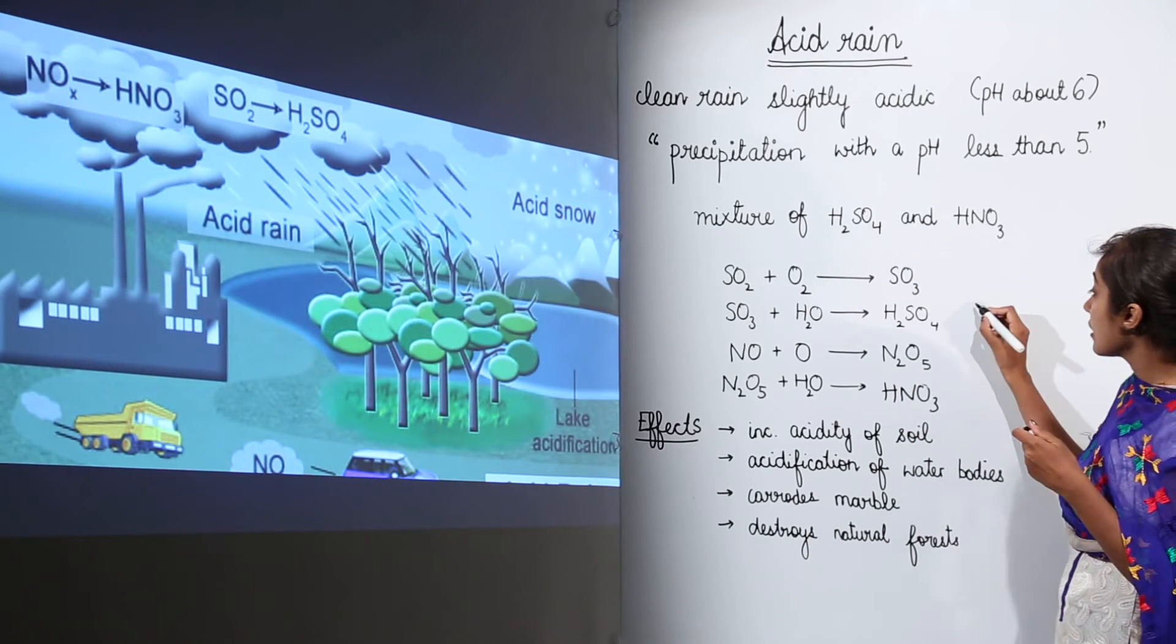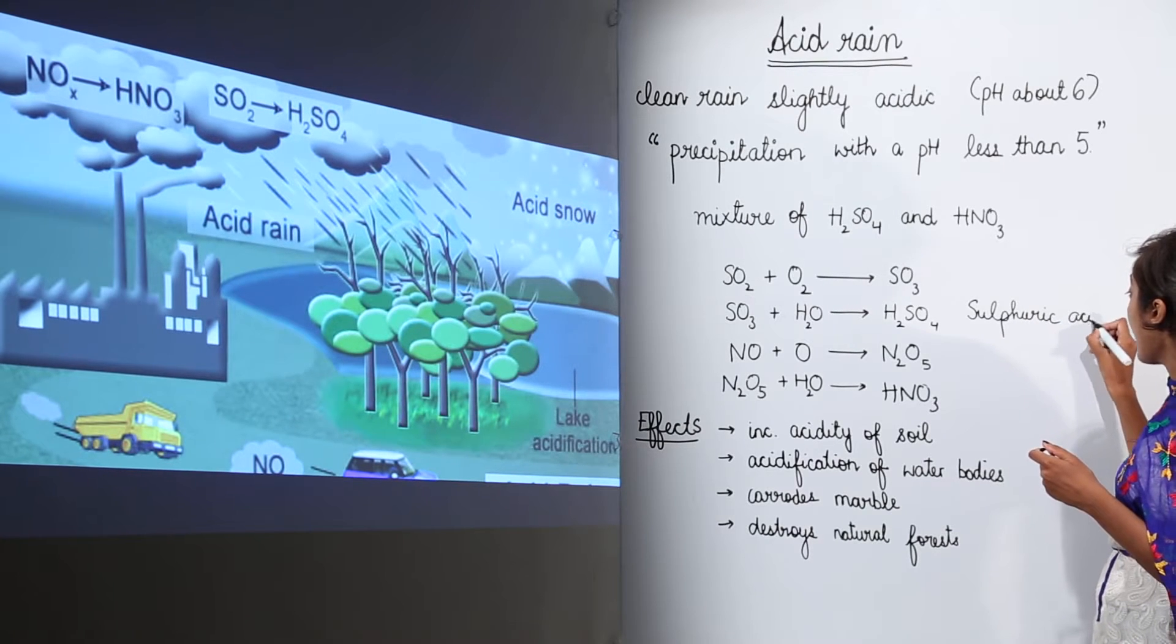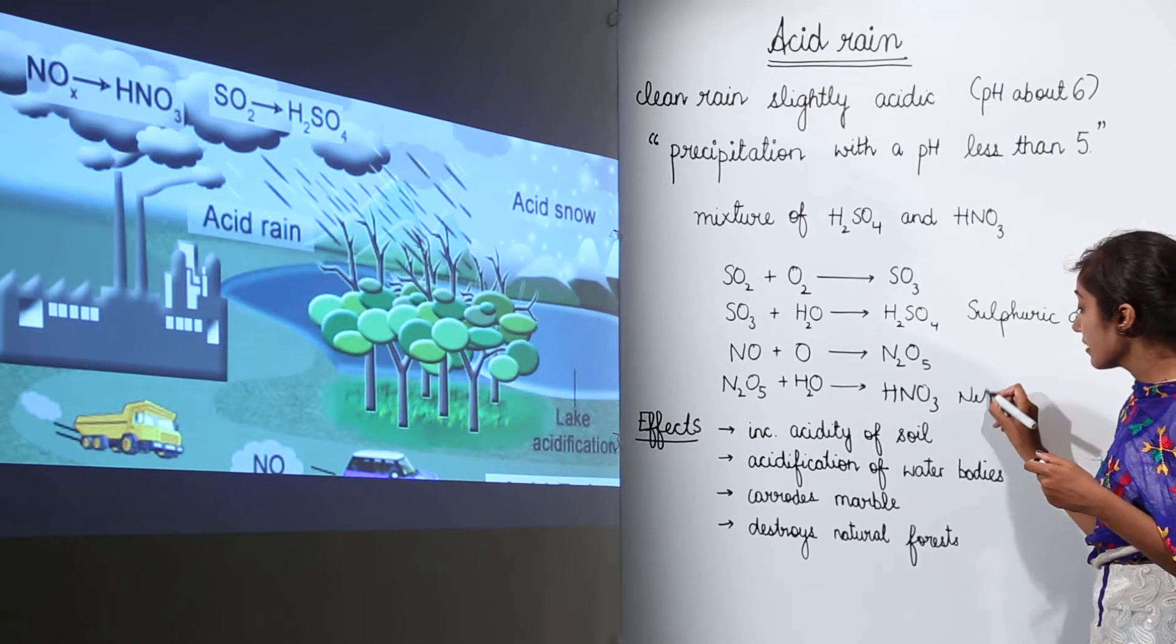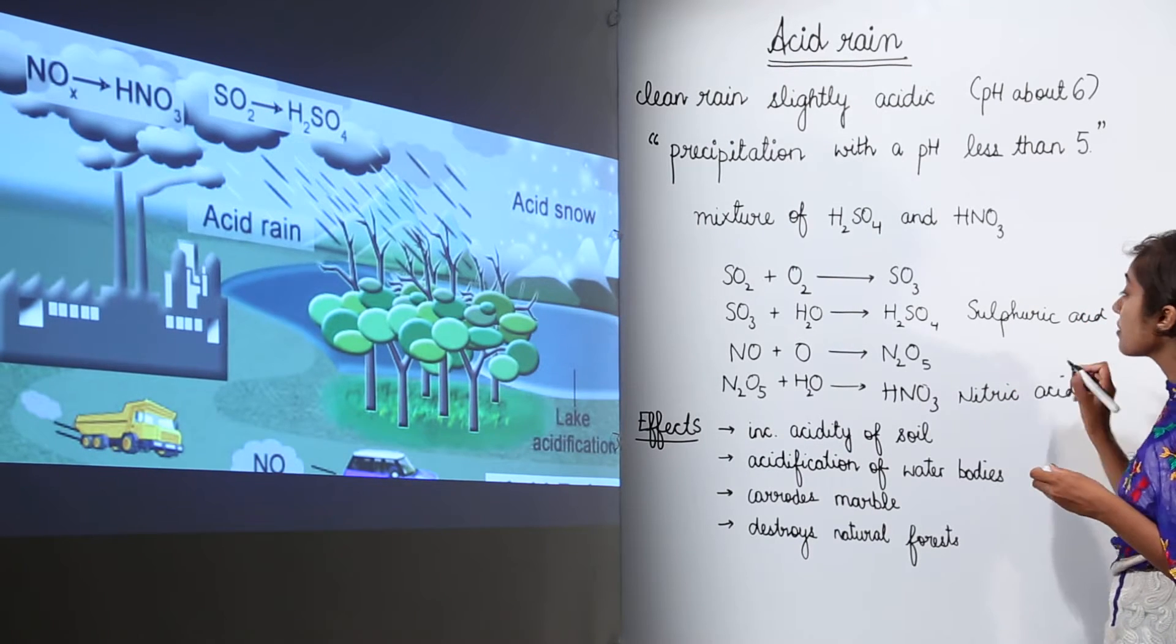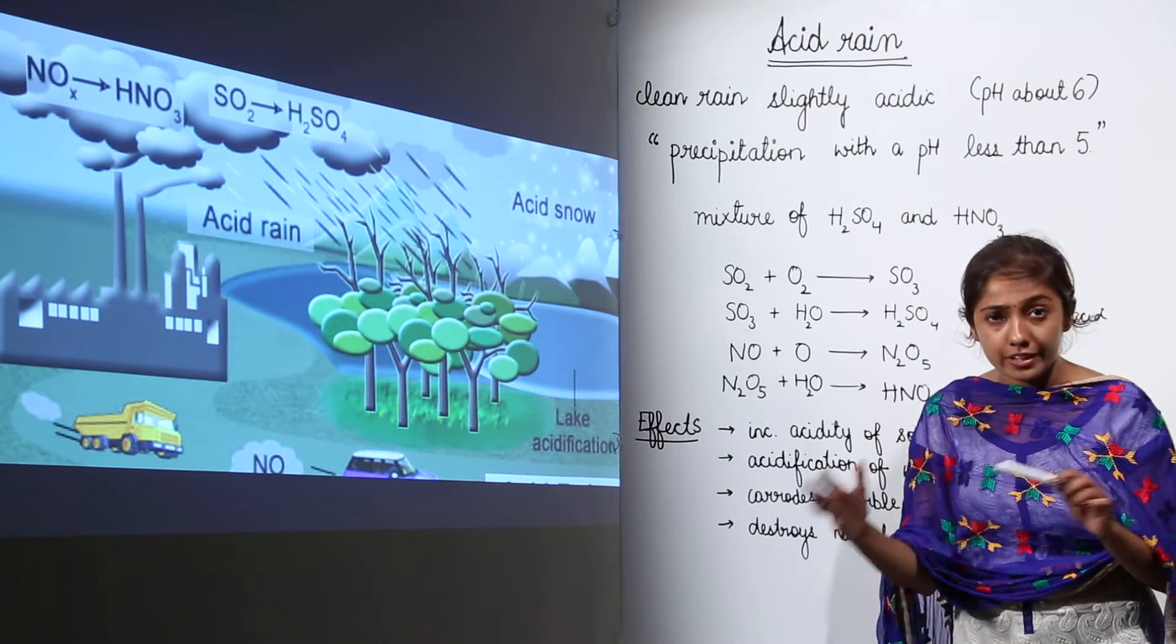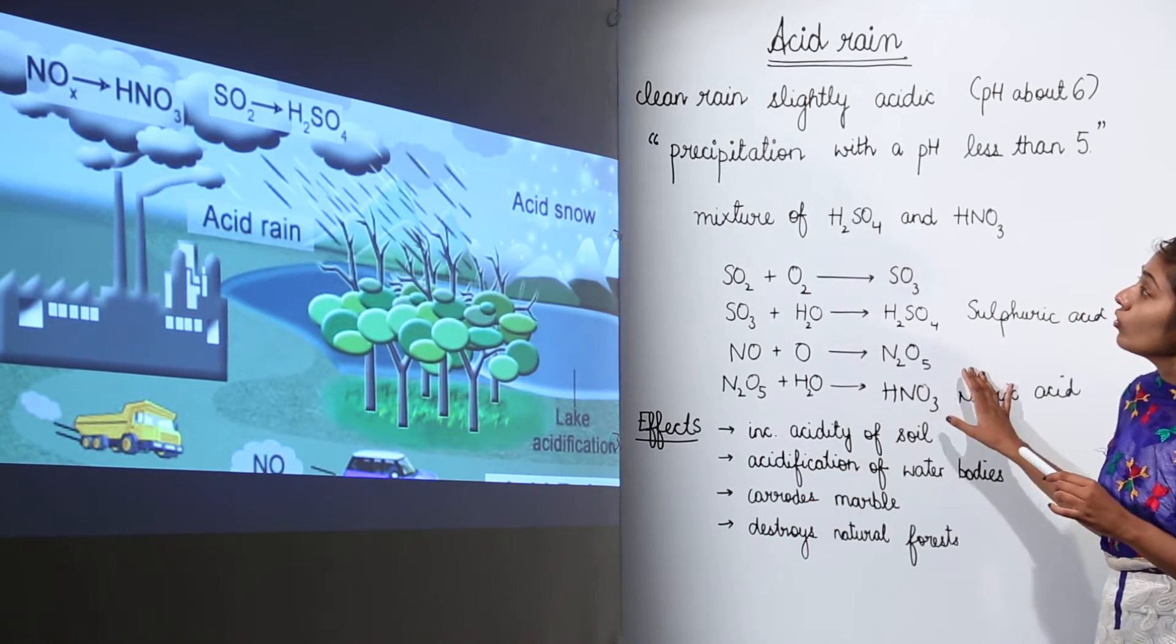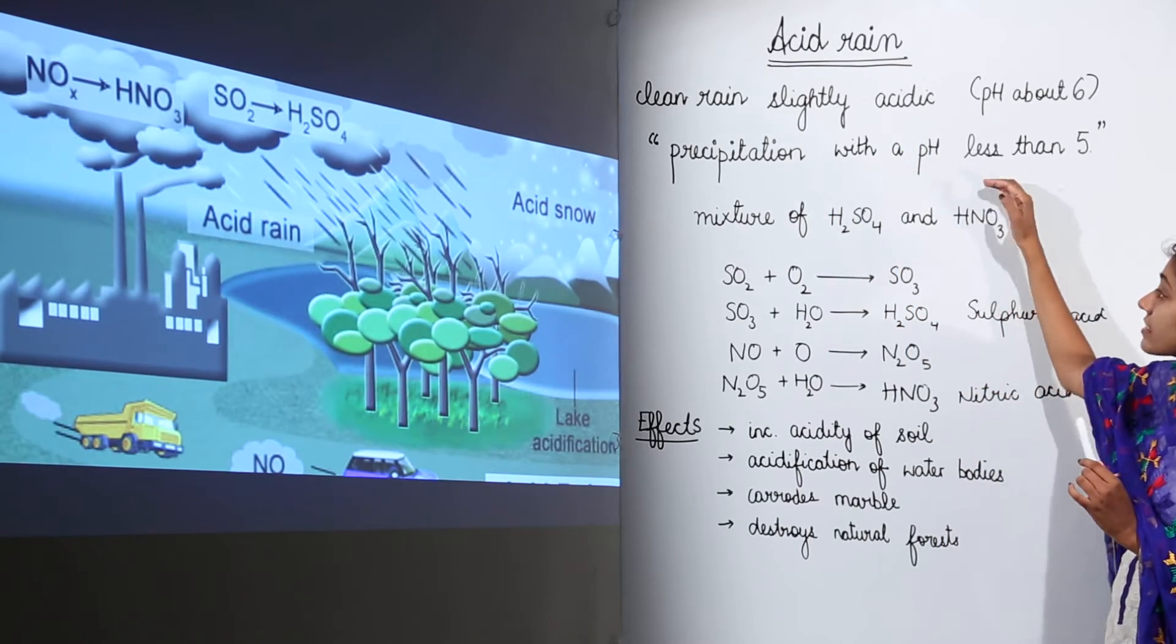This is sulfuric acid and this is nitric acid. So acid rain contains the mixture of these acids, and the ratio of these acids can vary. So what is acid rain? Precipitation with a pH less than 5.